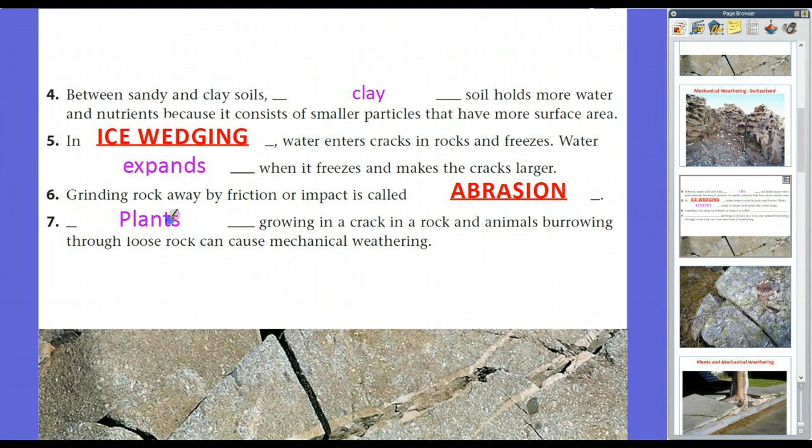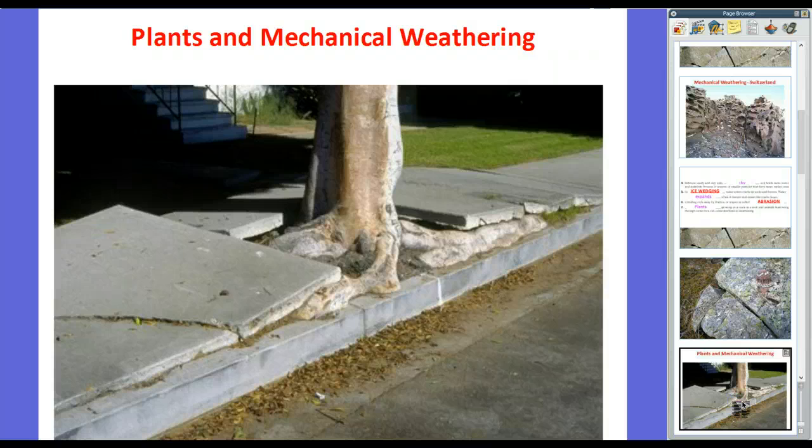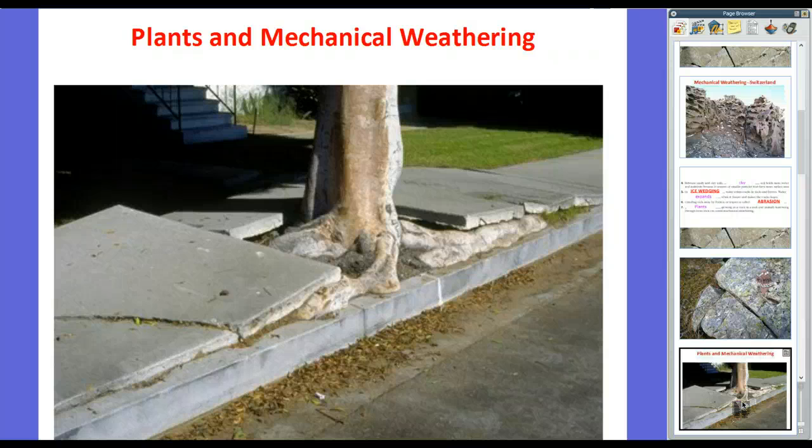And then we also will have even plants and animals will contribute to physical weathering because plants will grow in a crack, and much like ice wedging, it will break it apart. Animals burrowing through loose rock or even dirt can cause mechanical weathering. So here's an example. Plant weathering, not really real rock, but rather man-made concrete. What happened was this sidewalk was laid down next to a tree. The tree grows. Well, the tree kept on pushing and pushing and moving, and eventually all of the sidewalk broke.